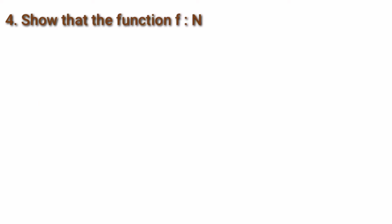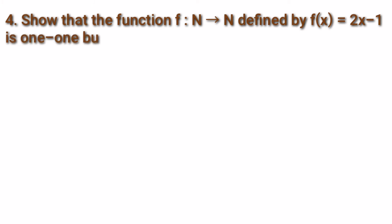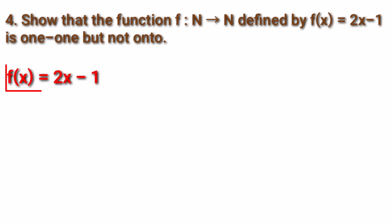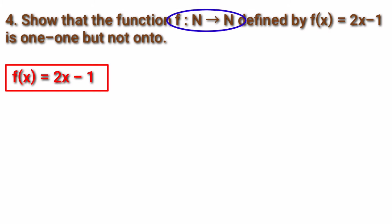Fourth sum: Show that the function f from ℕ to ℕ defined by f(x) = 2x − 1 is one-one but not onto. The formula is f(x) = 2x − 1. The function is given as f from ℕ to ℕ. ℕ is the natural numbers starting from 1 to infinity. We want to substitute the numbers 1, 2, 3, etc. for the value of x.